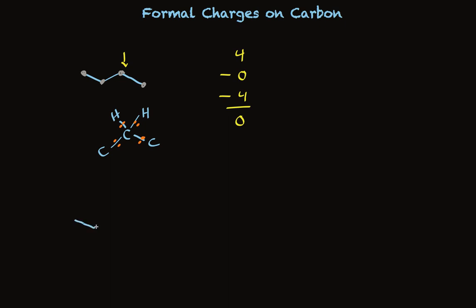We'll take the same structure. Let me put a plus charge here. That plus charge says that if we calculate the formal charge on carbon, that's going to come out to be plus one. And it's up to us to figure out how that can happen. What the structure is that will make the formal charge come out to be plus one.